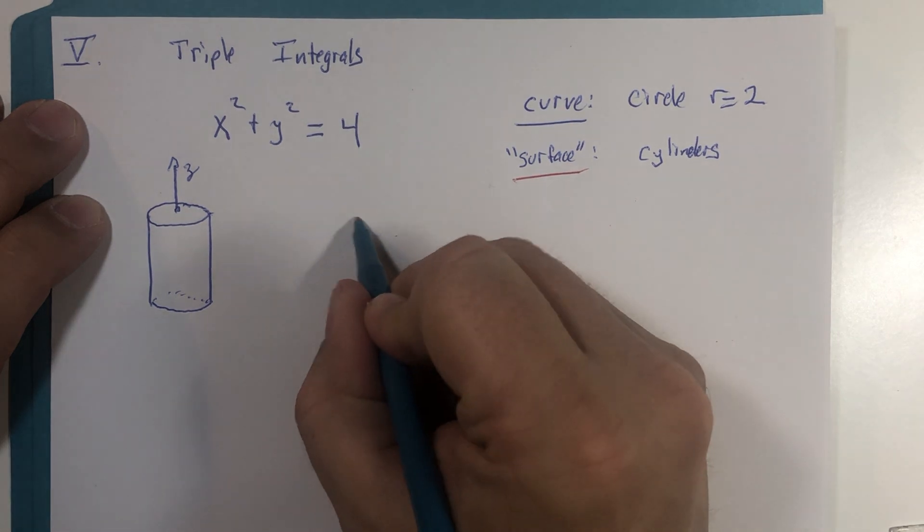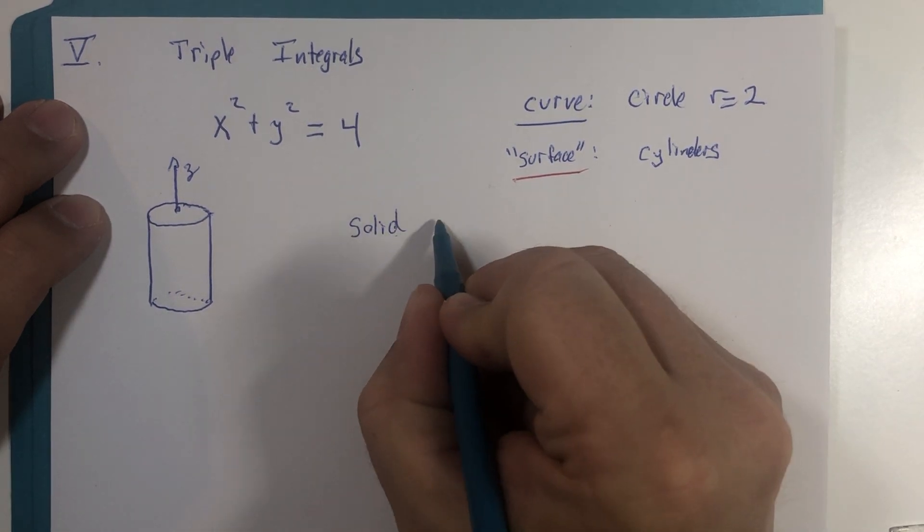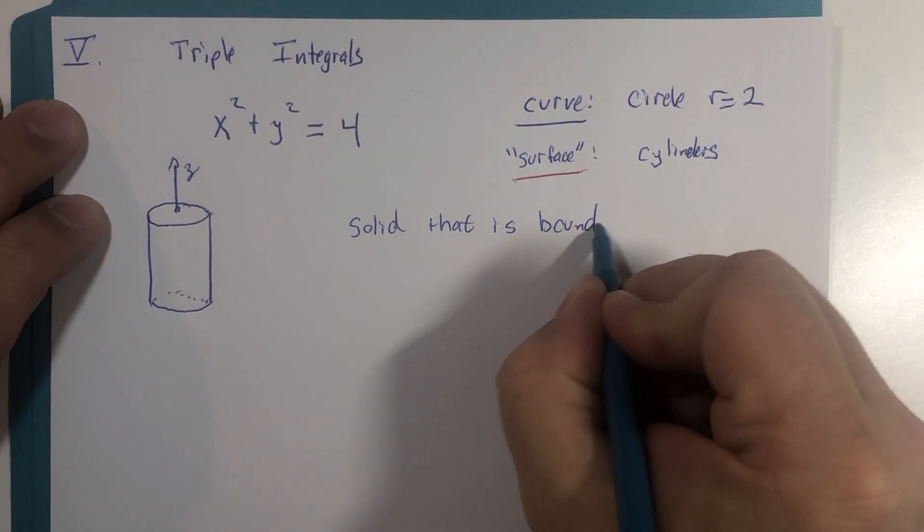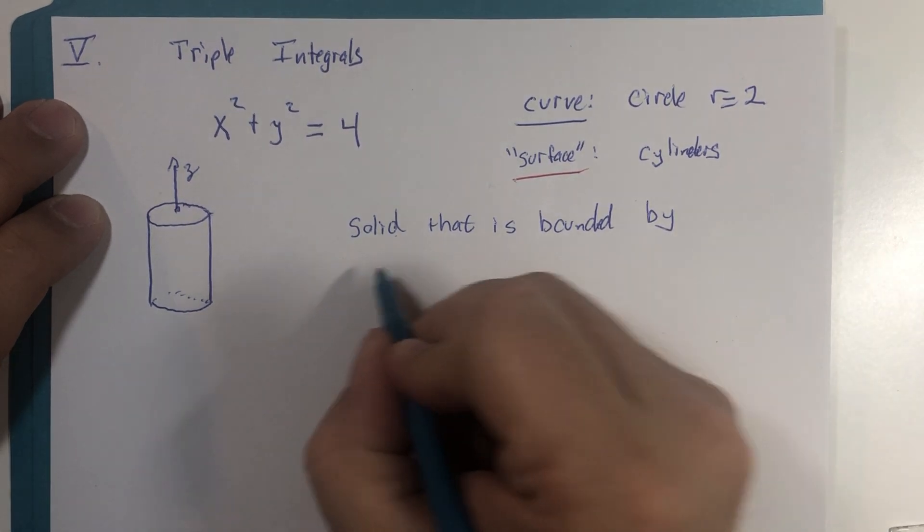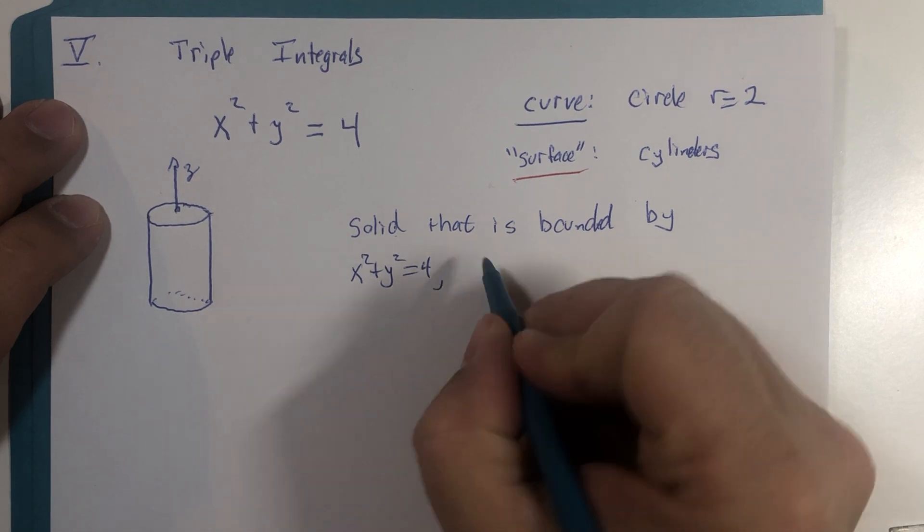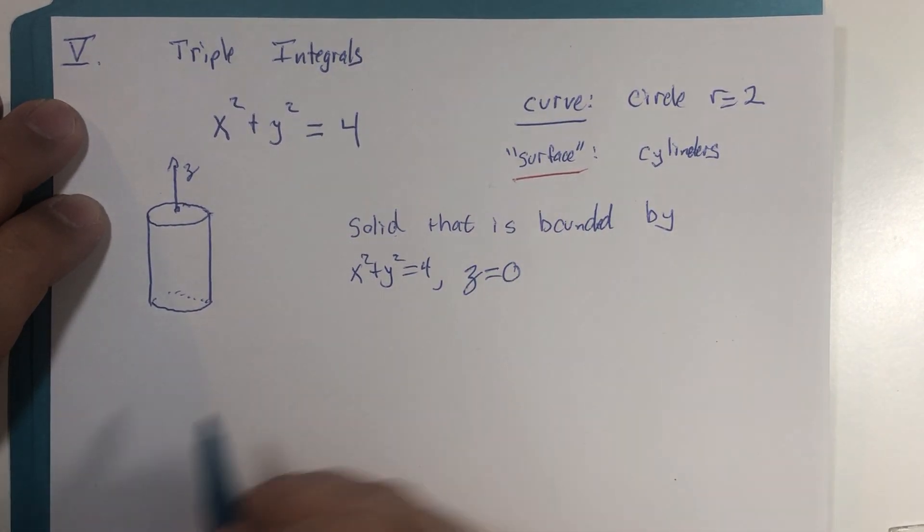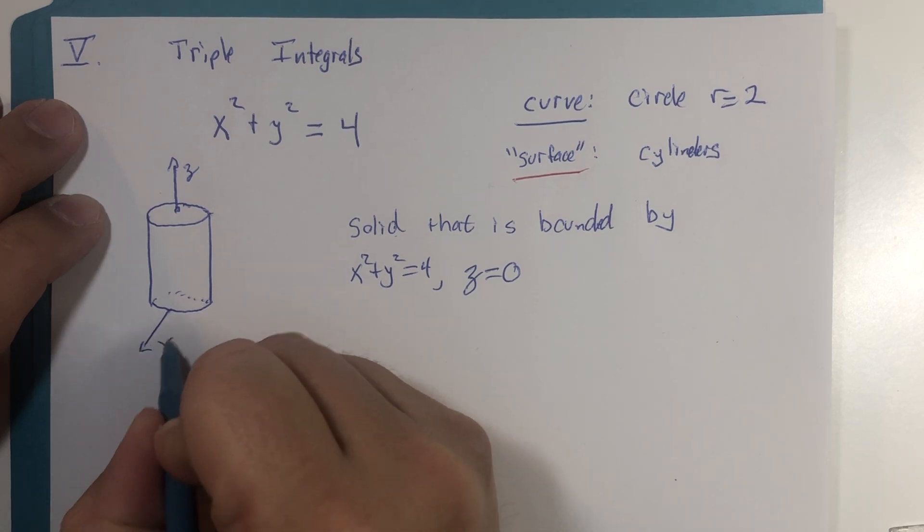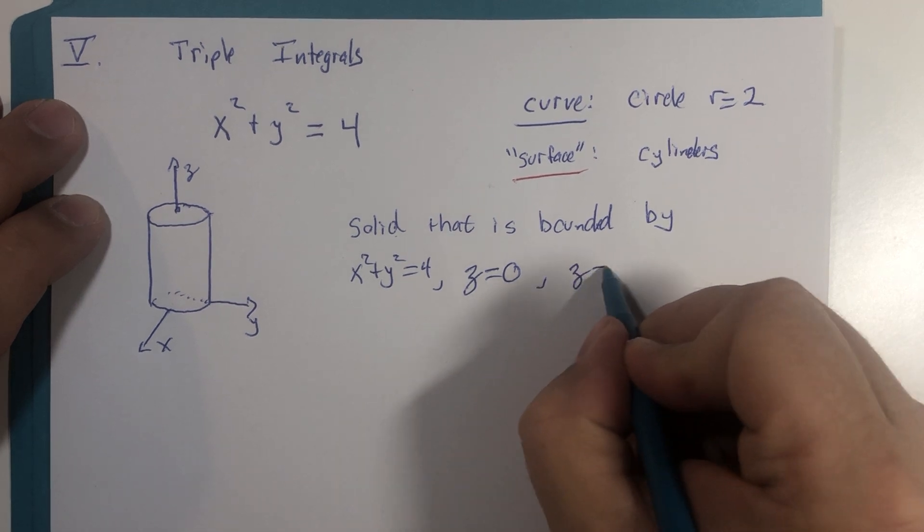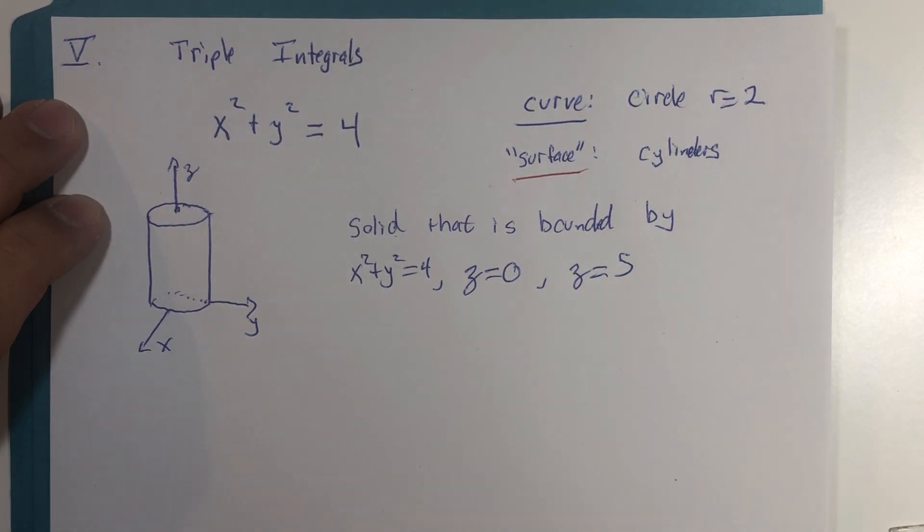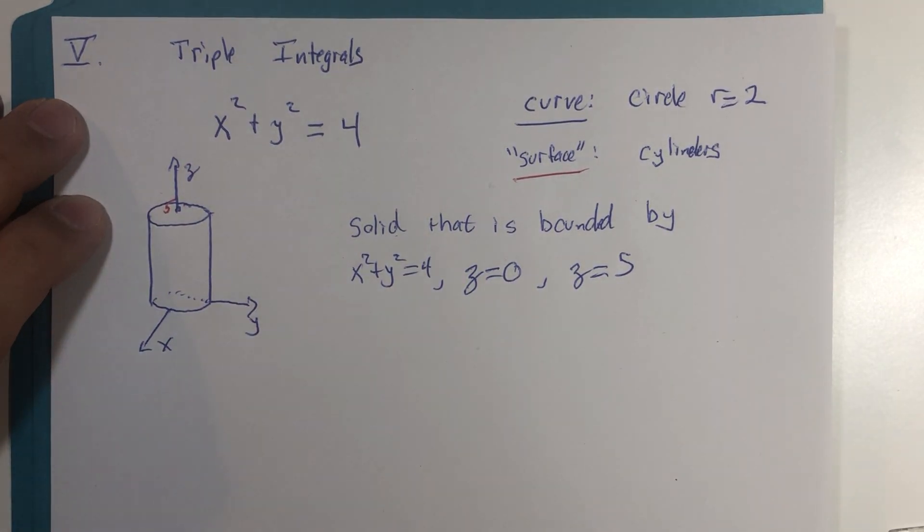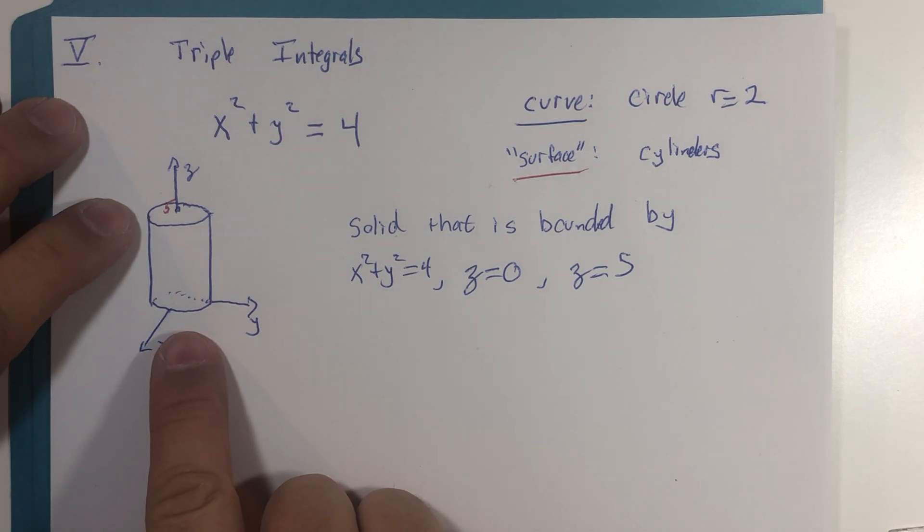So we're going to look at x squared plus y squared equals 4 as a cylinder for this problem. And we're going to look at a solid that is bounded by x squared plus y squared equals 4, z equals 0, which would be the xy plane, and z equals 5, which would be a horizontal plane five units above the xy plane. So an actual cylinder that could contain something.